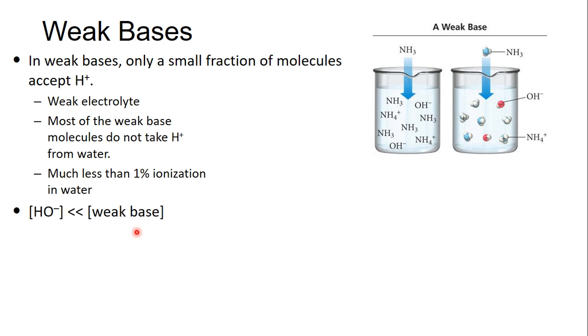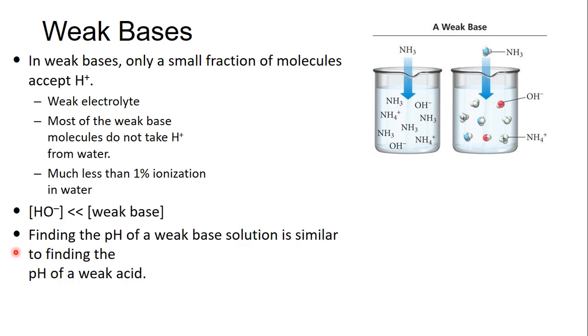So your weak base concentration will be greater than your OH- concentration in water. To figure out the pH of a weak base solution, it's the same thing as finding the pH of a weak acid solution. You just set up an equilibrium problem and you set up an ICE table. So go back to the video on how we went through the steps of finding out the pH of a weak acid.